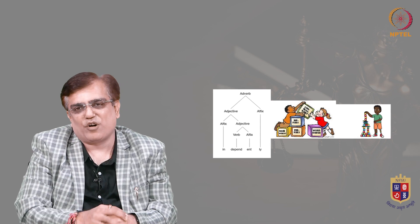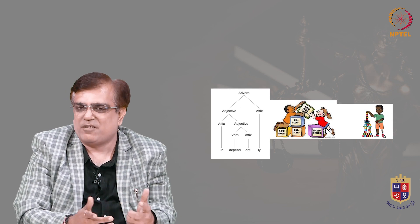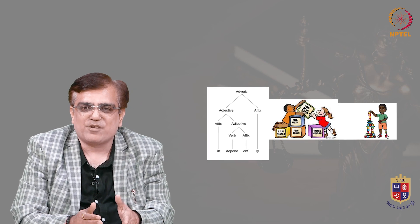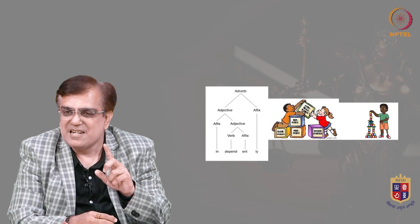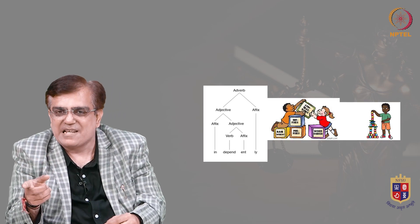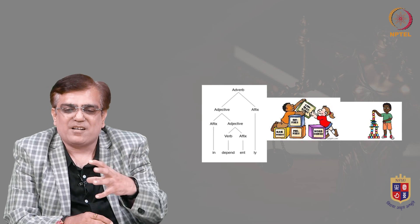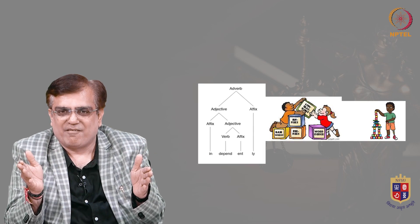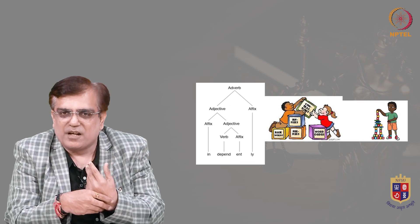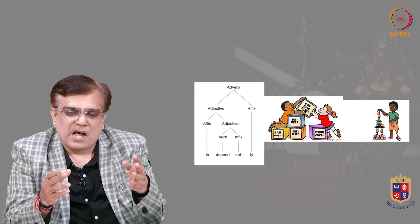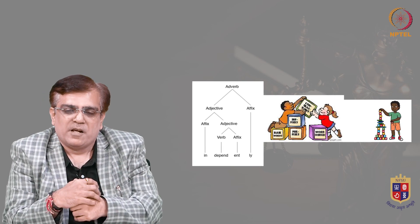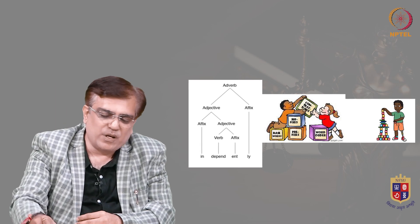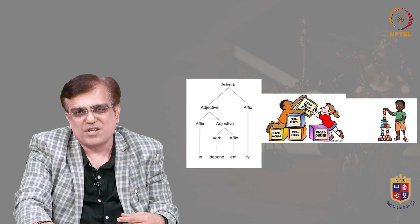Let us move forward to morphology. Morphology — in one word we can say — is the structure of words. We will explore different types of morphemes: for example, 'un-' is a prefix, '-ness' is a suffix. In the word 'unhappiness,' we can divide it into three parts. Some morphemes can stand alone while others need to be attached to make sense. We can find the basic rules of morphology in the e-content, which will help you clarify your concepts.